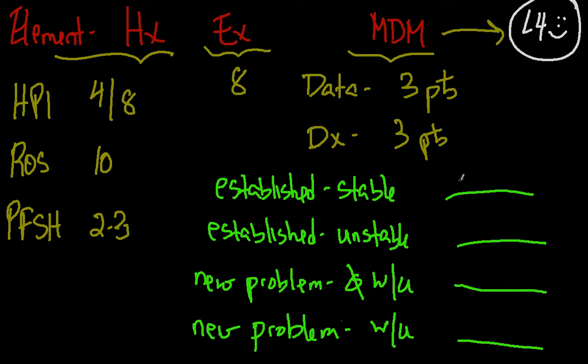So what are these points? For every established problem that's stable, you get a point. For every established problem that's unstable, you get two points. For every new problem that you're not going to work up, say for example you're going to refer to someone else to do the workup, three points. And for every new problem that you are going to work up, four points.